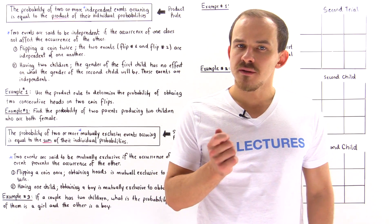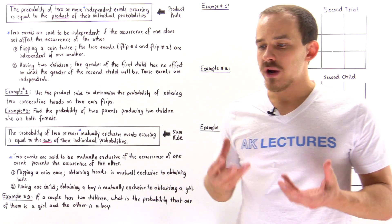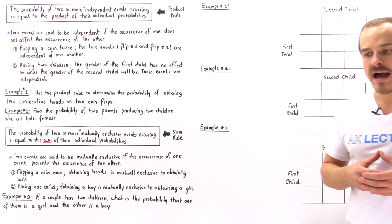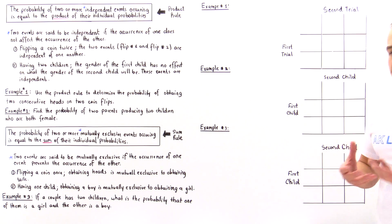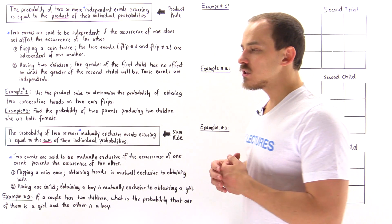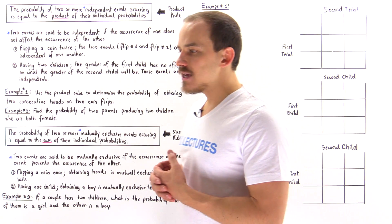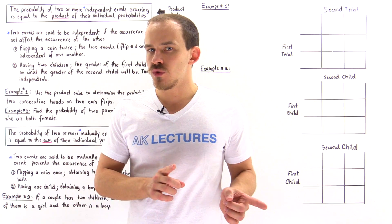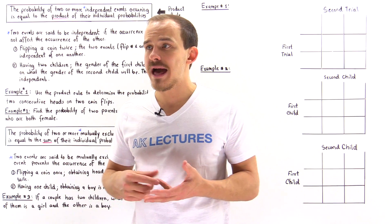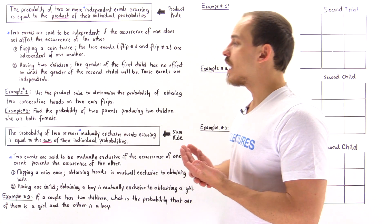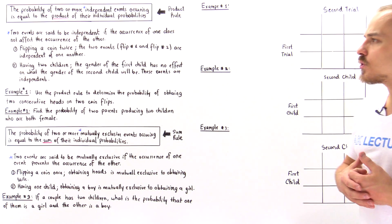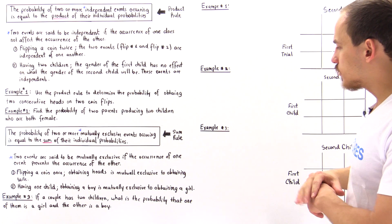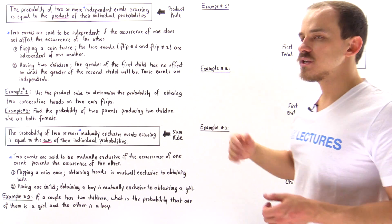In genetics, in order to correctly determine and calculate the probability values of different events and outcomes taking place, we have to be familiar with two important rules that come from mathematics and probability. Rule number one we call the product rule, and rule number two we call the sum rule.